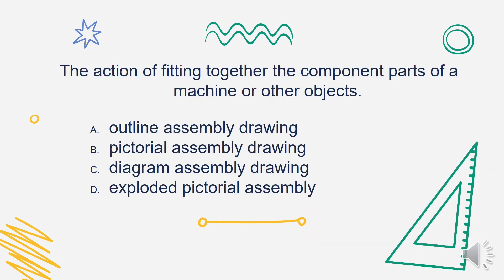Next question: which type of drawing shows the action of fitting together the component parts of a machine or other objects? Is it A. Outline Assembly Drawing, B. Pictorial Assembly Drawing, C. Diagram Assembly Drawing, or D. Exploded Pictorial Assembly? The answer is Letter D. Exploded Pictorial Assembly.